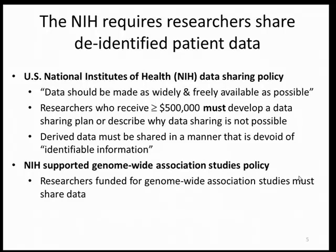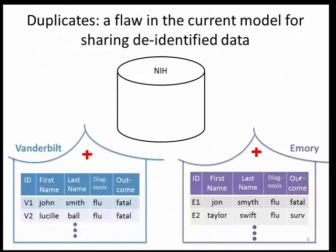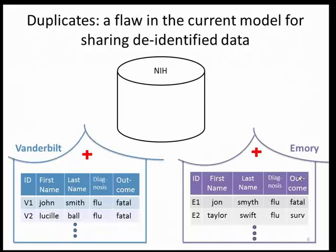However, I'd like to suggest that there's a flaw in the way the current model for de-identified data sharing happens. Here's an example of one kind of error that can be introduced — duplicates. Imagine you have two different hospitals, Vanderbilt and Emory, and at each hospital you have a set of patient records with identifying information such as first name and last name, and also clinically relevant information such as diagnosis and outcome. Imagine researchers want to look at how many people were diagnosed with flu and ended up dying. Take a look at how the current model for de-identified data sharing happens — first, the researchers de-identify the data by removing first and last names and sending only the clinically relevant information to the NIH.